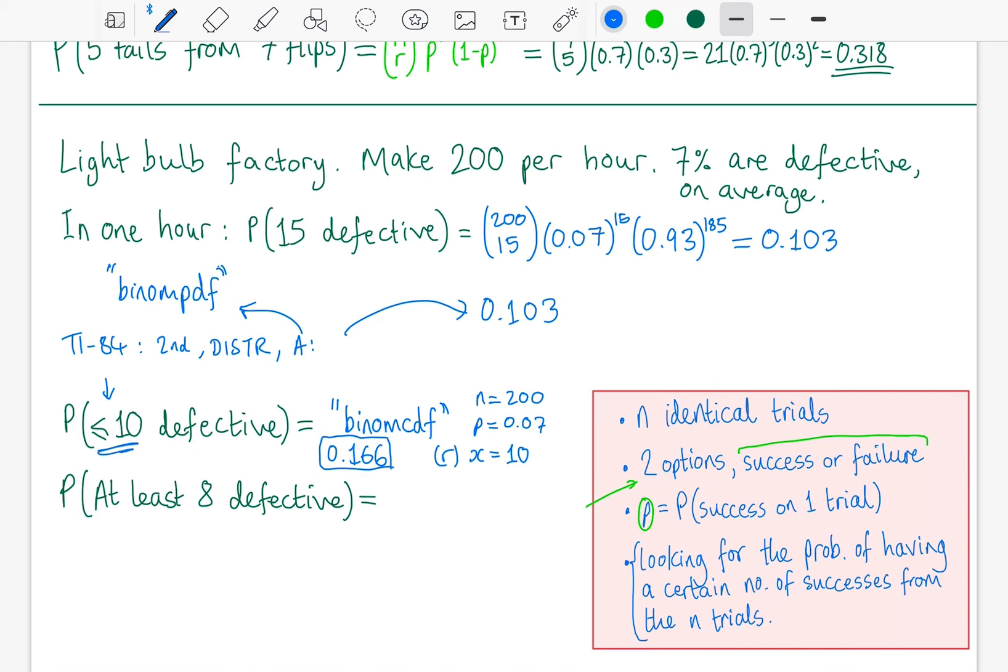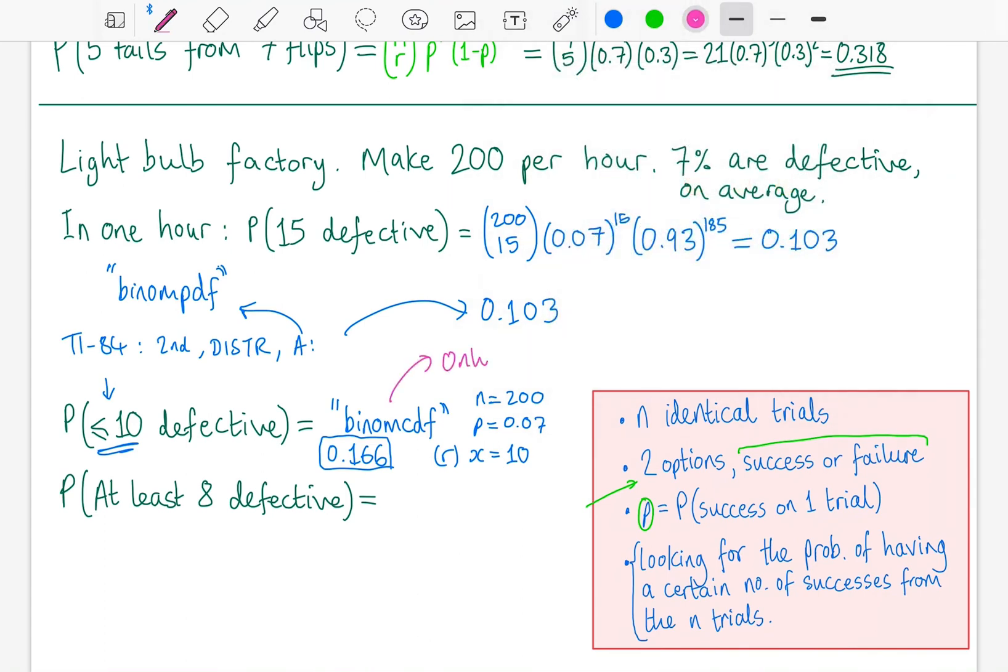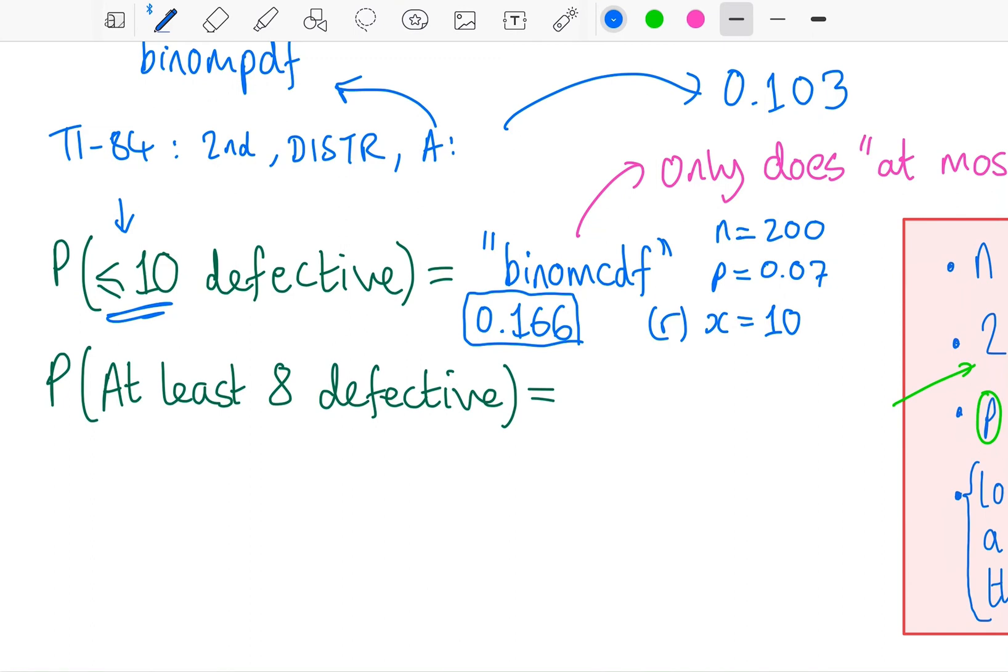And you might be thinking, are there options for, you know, more than, less than, greater than or equal to, but no. So CDF, let's get another color here, only does at most a certain number of successes. Only does at most, or you, another way for it would be less than or equal to. That's the only option on TI-84s at least, I think, for most calculators. Now, what if you needed at least eight defective light bulbs, the probability of that happening? I suggest a little diagram here,